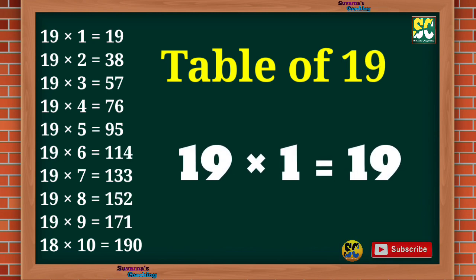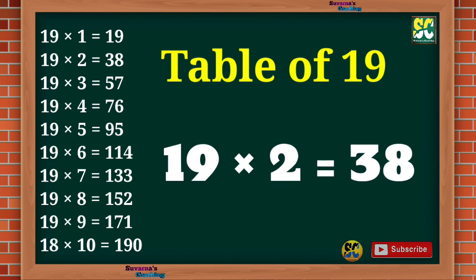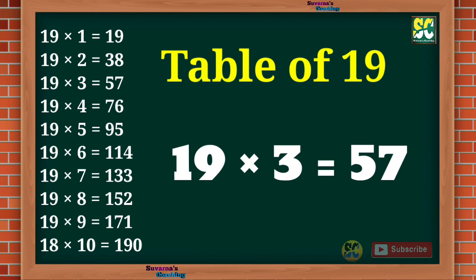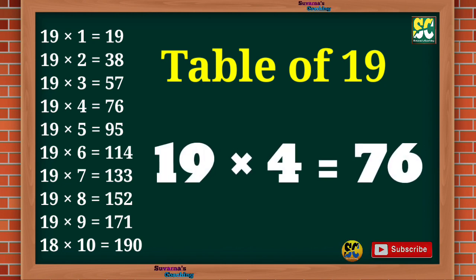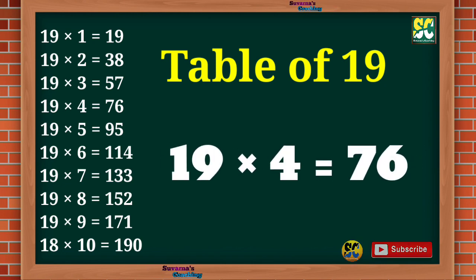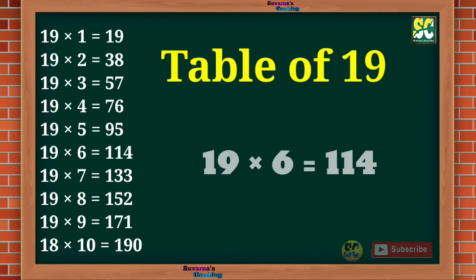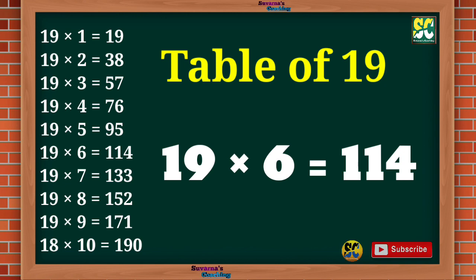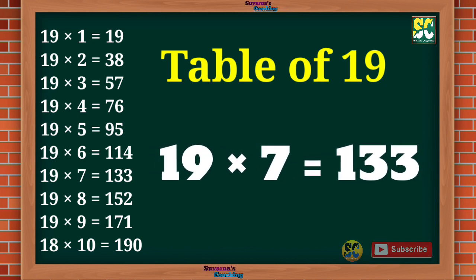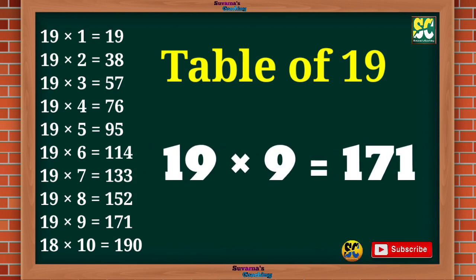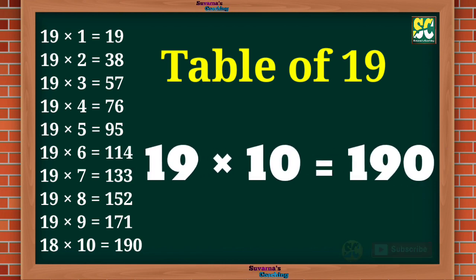Table of 19. 19 1s are 19, 19 2s are 38, 19 3s are 57, 19 4s are 76, 19 5s are 95, 19 6s are 114, 19 7s are 133, 19 8s are 152, 19 9s are 171, 19 10s are 190.